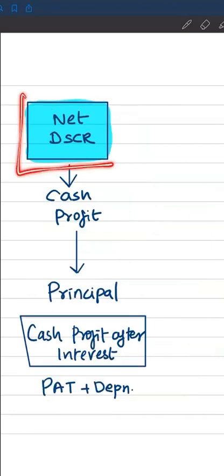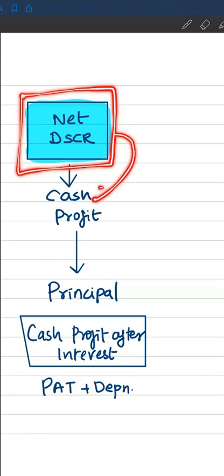Whereas in net DSCR, the focus is what amount of cash profit is available only for servicing the principal. This cash profit does not account for interest payments.